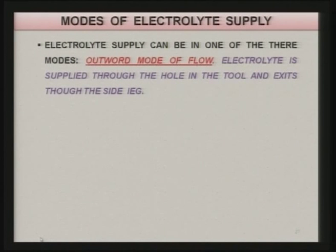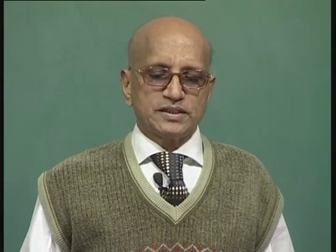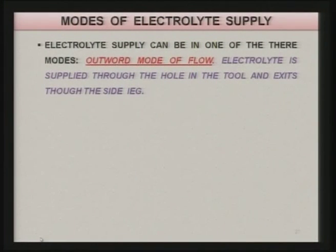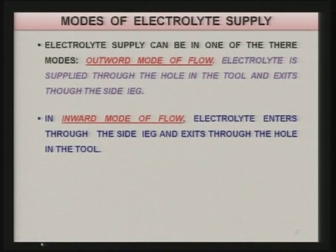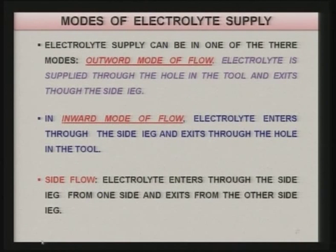Modes of electrolyte supply — this is something very important. How to supply electrolyte in the inter-electrode gap between the tool and the work piece. Electrolyte supply can be in one of three modes. In the outward mode, electrolyte is supplied through the hole in the tool and exits through the side inter-electrode gap. In the inward mode, electrolyte enters through the side inter-electrode gap and exits through the hole in the tool. The third mode is side flow, where electrolyte enters from one side and exits from the other side of the inter-electrode gap. In all three cases, the profile of the anode obtained is slightly different from each other.